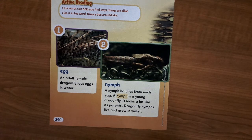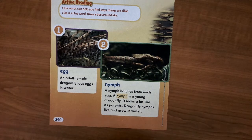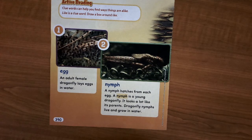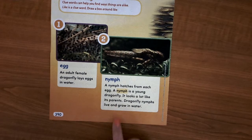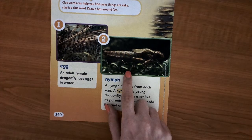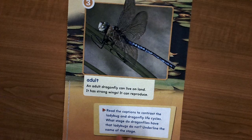The second stage is called a nymph. A nymph hatches from that egg. If you hear the word nymph, it is a young version of that animal. So a nymph can be a young dragonfly, and we also call a young grasshopper a nymph. It looks a lot like its parents, and dragonfly nymphs actually live and grow in the water.